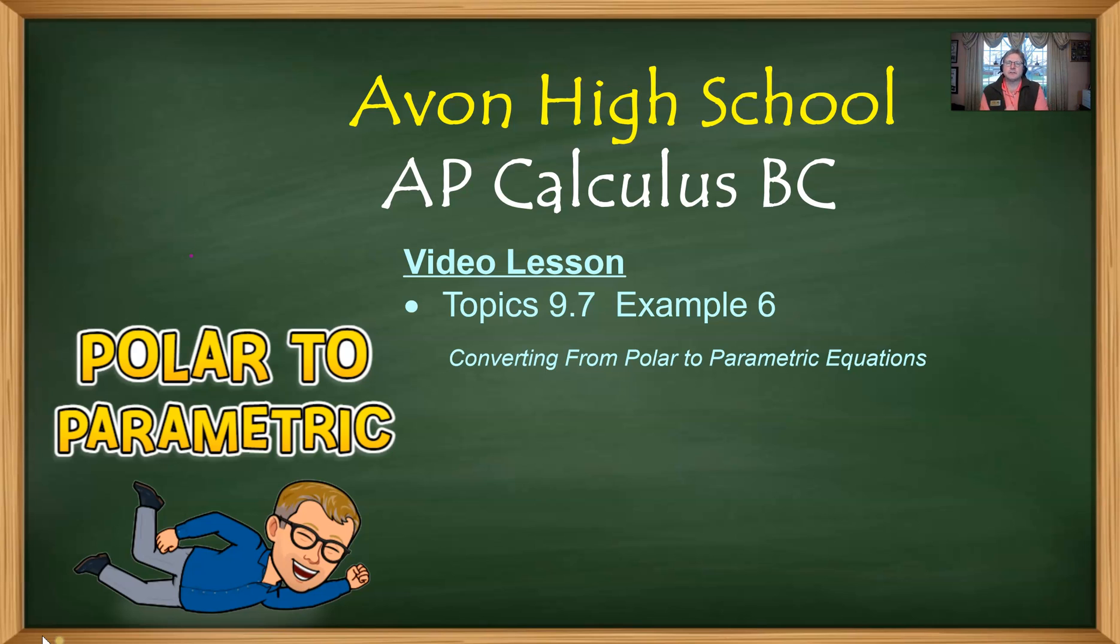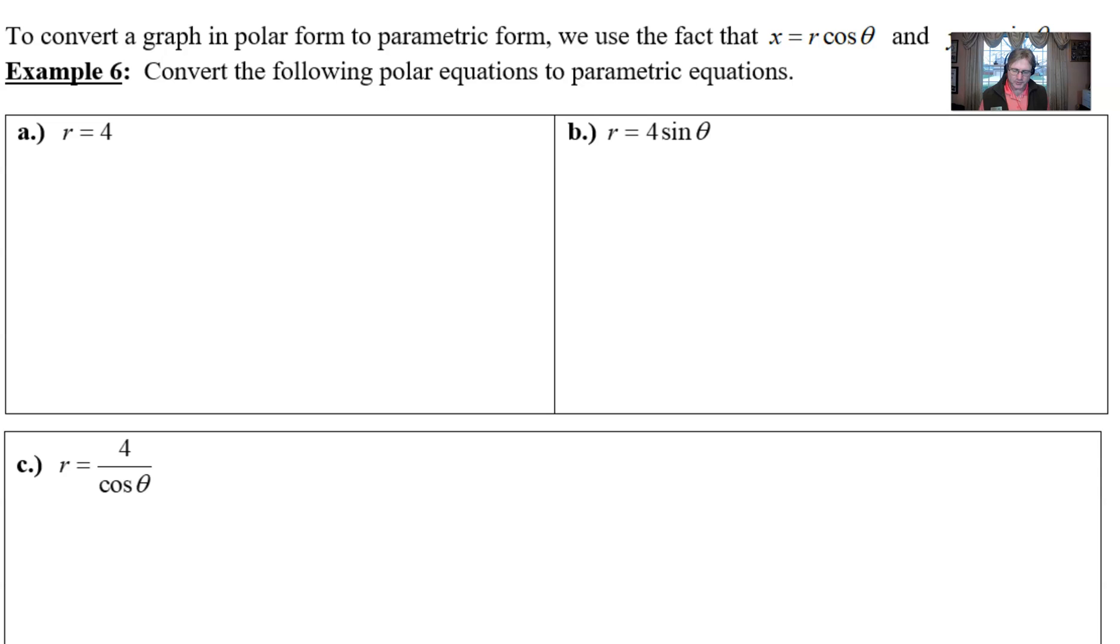One thing that we haven't tried yet is to bridge the gap between polar to parametric, and that's what this video is all about. If we take a look at our example six, as we see from my notes, it says to convert a graph in polar form to parametric form we're going to use our good buddies x equals r cosine theta, y equals r sine of theta.